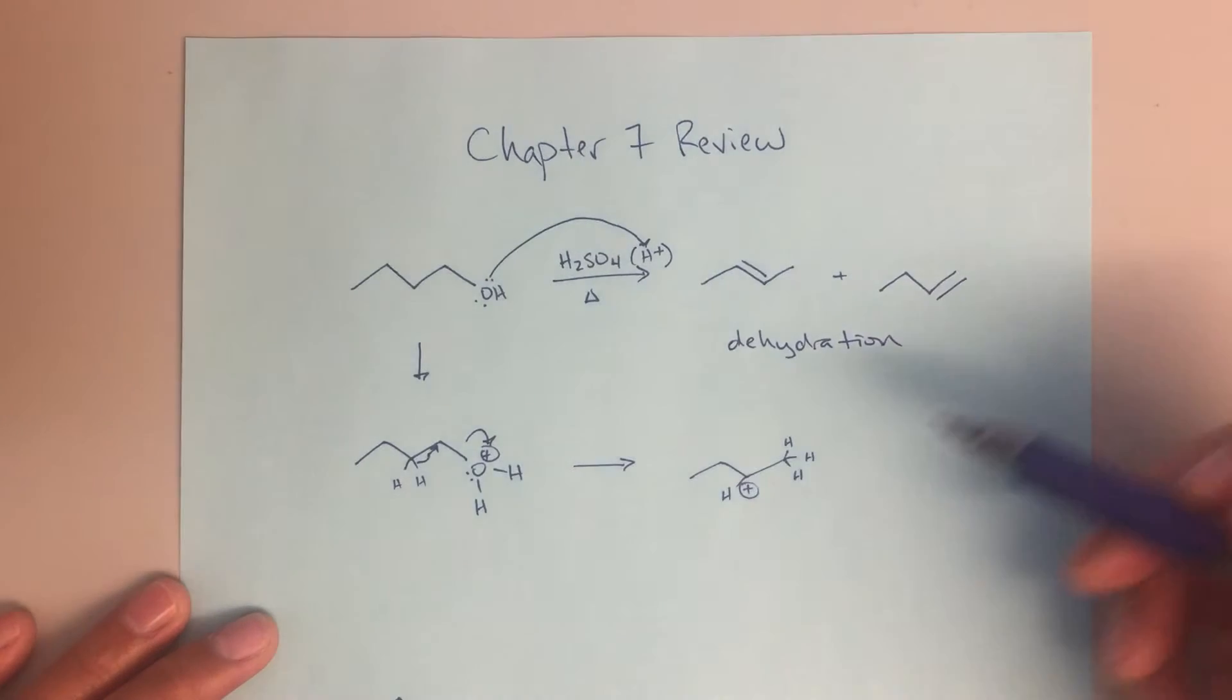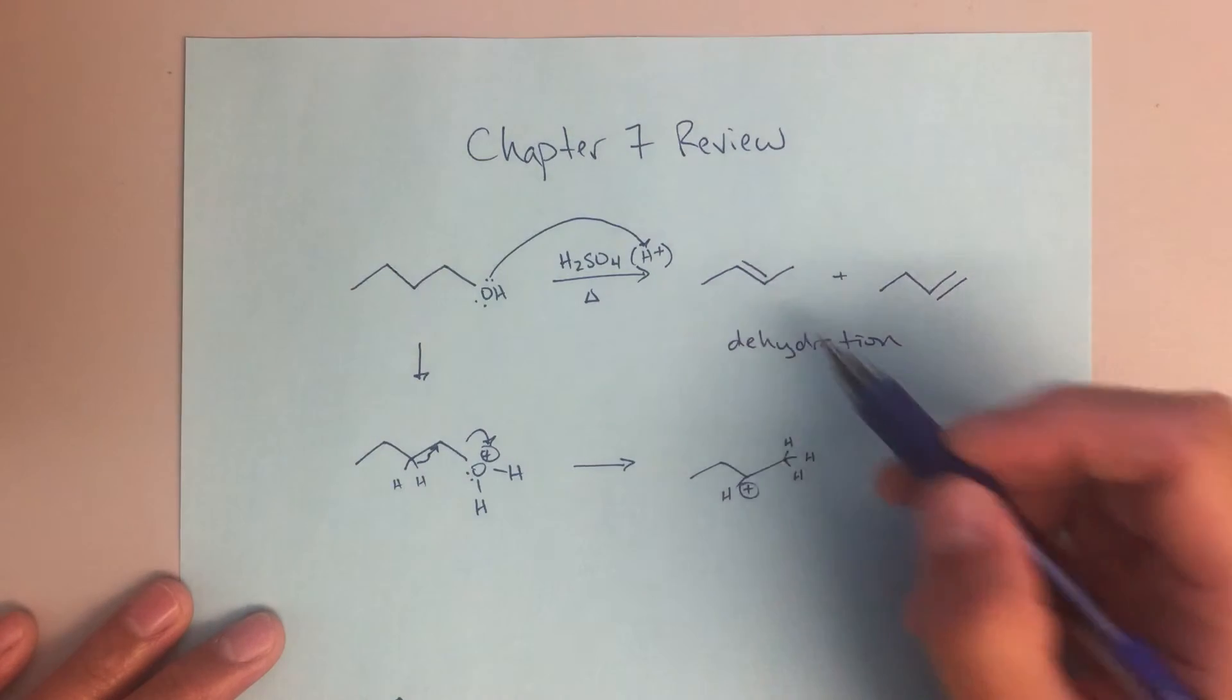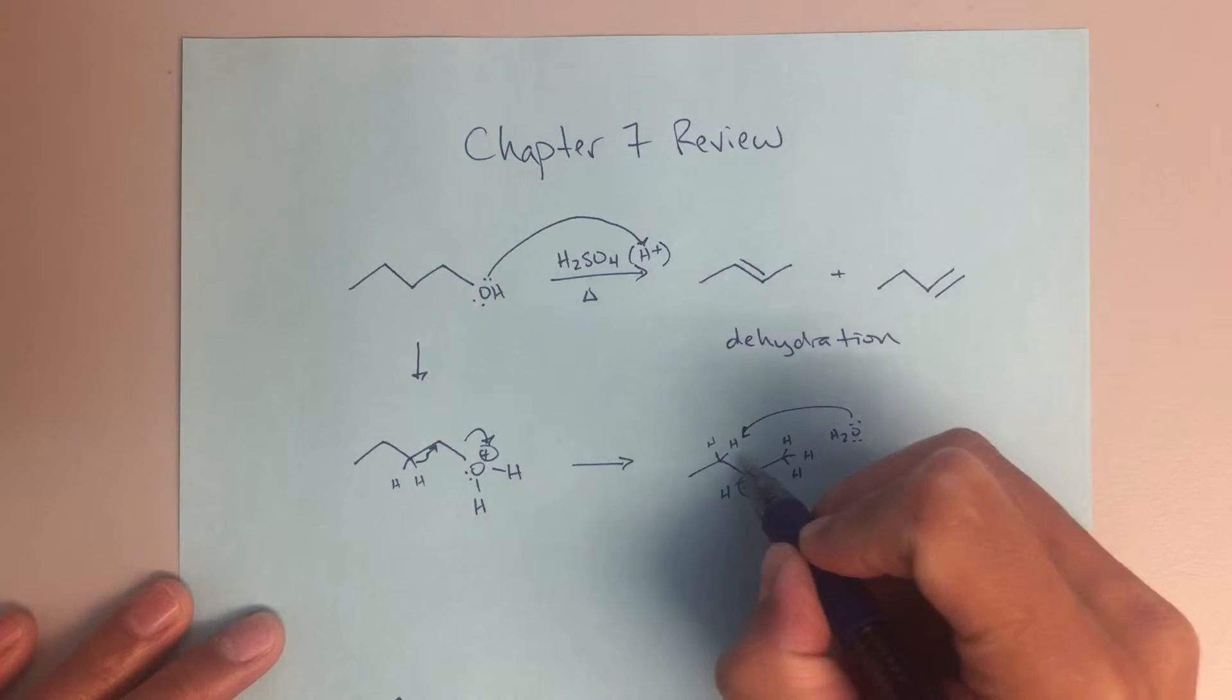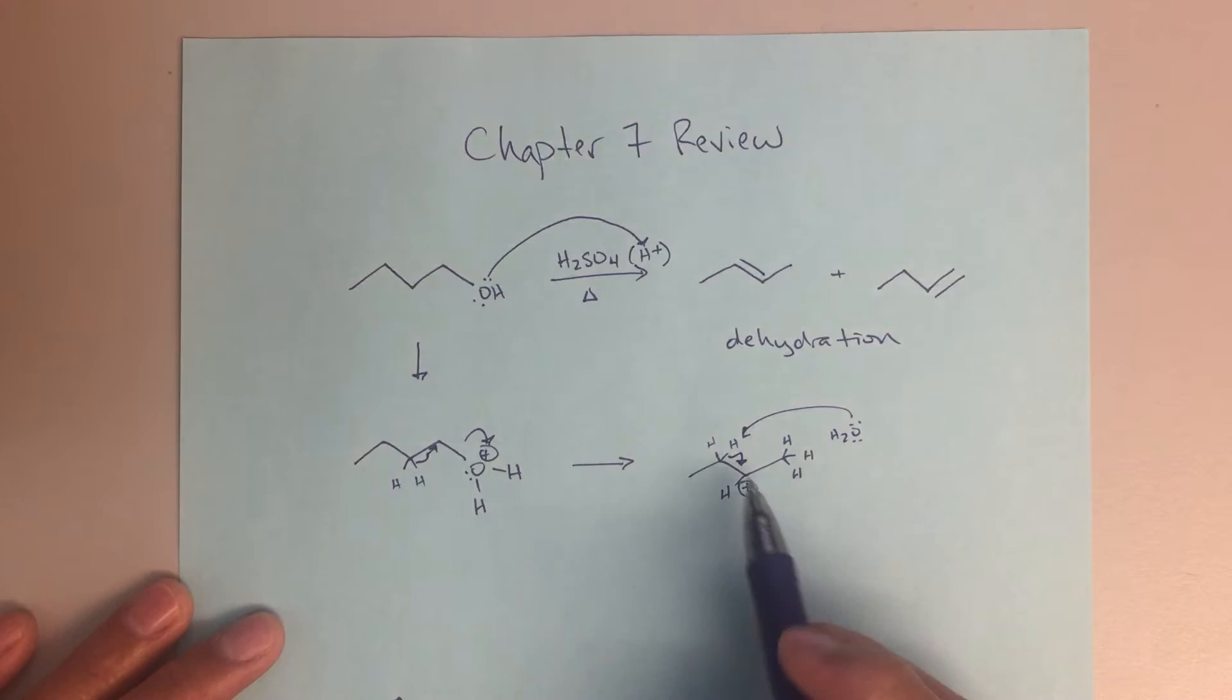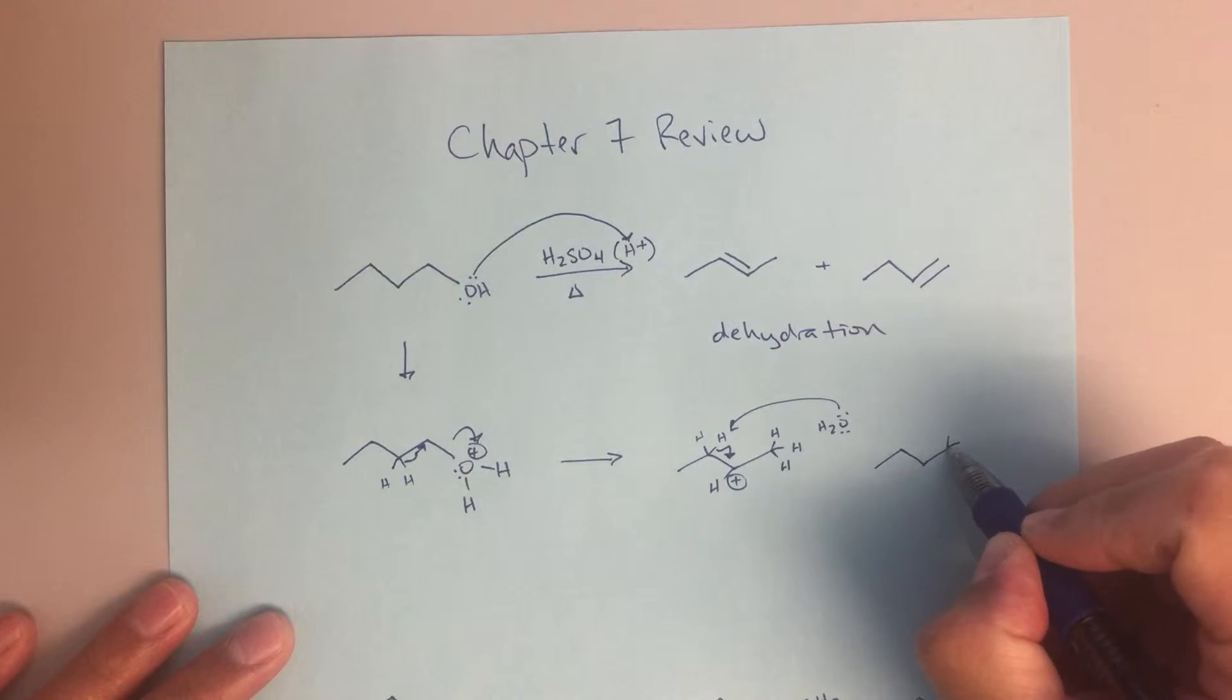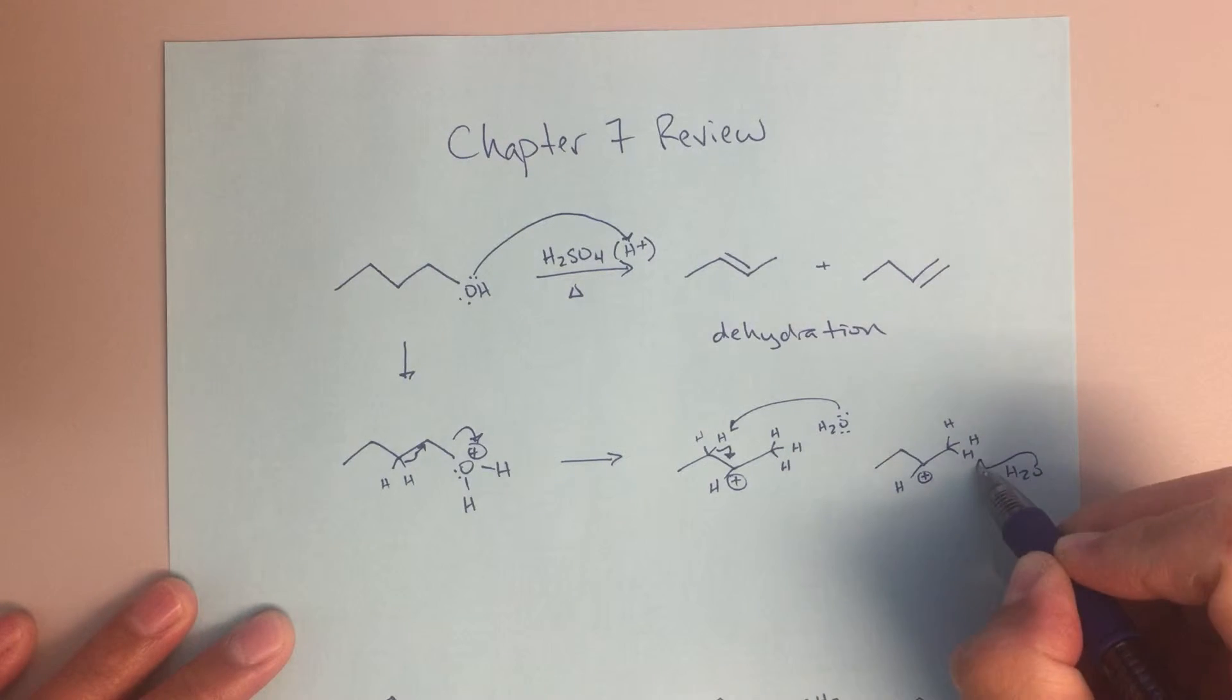From here, then it's pretty straightforward to eliminate to get to our desired products. If I want to form this internal alkene, I'm going to take my water molecule and deprotonate here. These electrons are going to move into this double bond to form our first product. And then for my second product, I'm just going to take one of those protons to form this secondary product here.